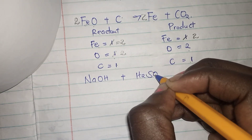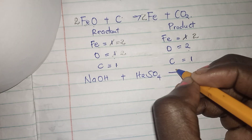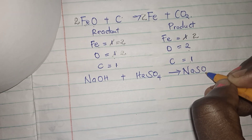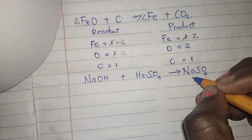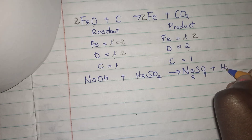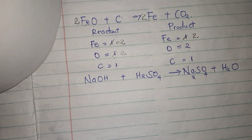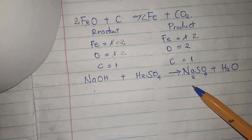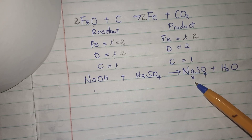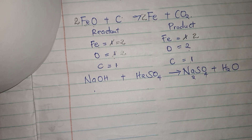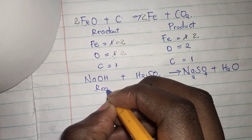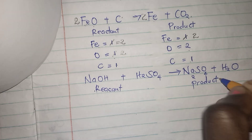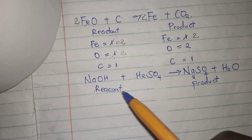This is sodium hydroxide plus sulfuric acid — I get a salt, sodium sulfate, plus water. I am reacting a base plus an acid and my end result will be a salt plus water. Let us balance the equation. This is the reactant side and this is the product side.